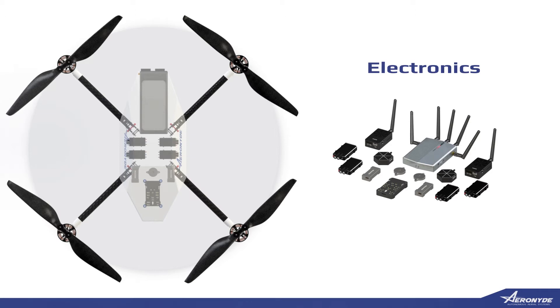The electronic system is made of the flight controller, onboard CPU, communications hardware, navigation or GPS, obstacle avoidance, and sensing data transmission. This is the brain of the drone, and it is modular and can be upgraded.